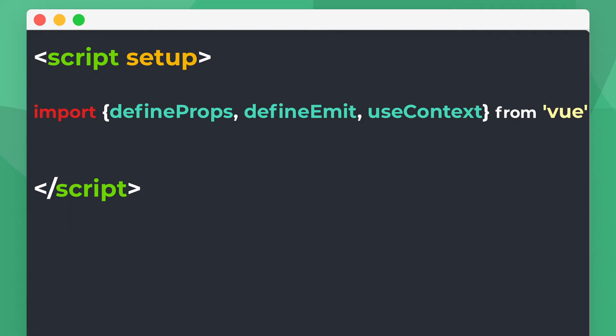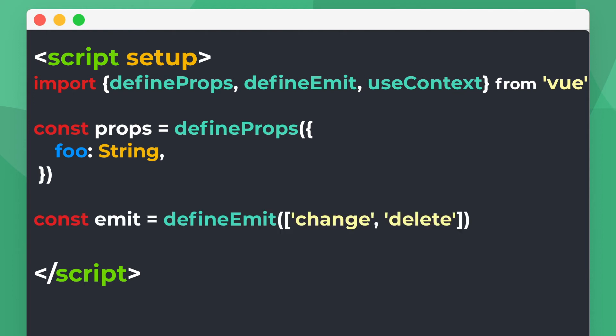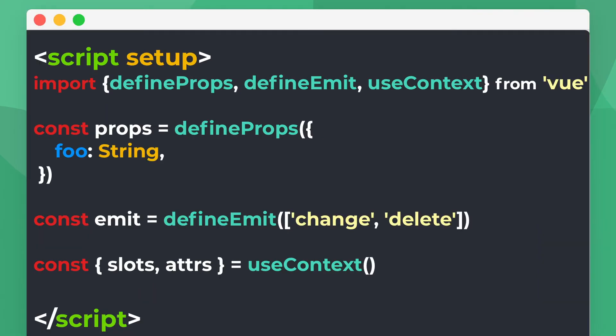Define props — as the name suggests, this allows us to define props for our component. Define emits, which lets us define the events that our component can emit, and then in our template we can easily emit events like this. And then use context, which gives us access to the slots and attributes of our component. With these three imports, we can get the functionality that we're used to having in our traditional setup method.